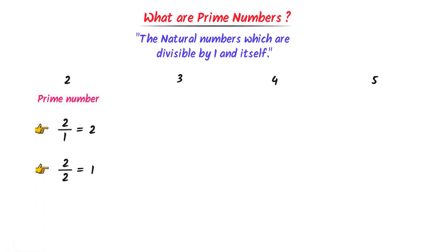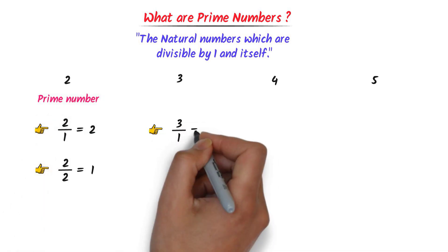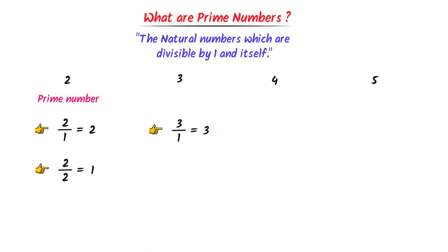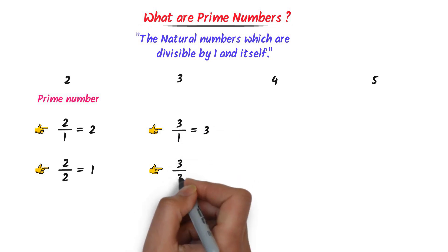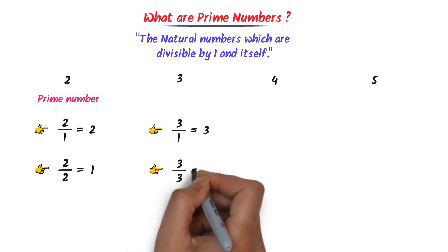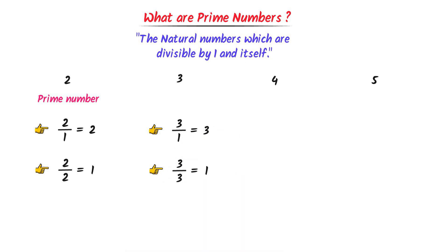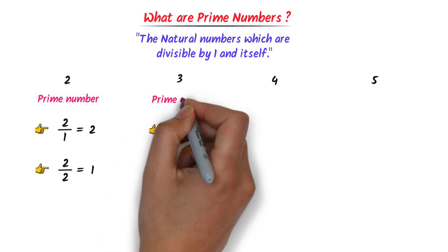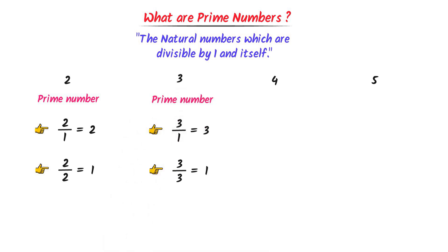Secondly, we can divide 3 by 1 and get 3. We can also divide 3 by 3 and get 1. Hence, since we divide 3 by 1 and itself, it is a prime number.